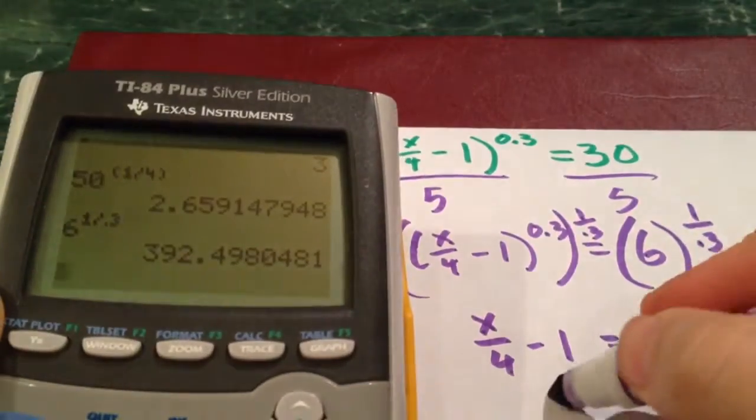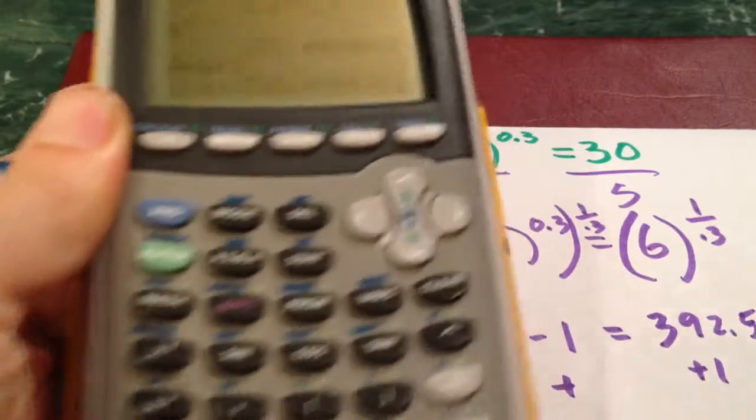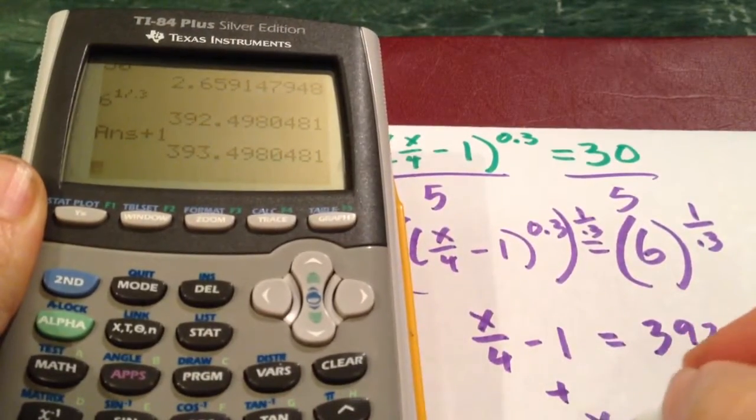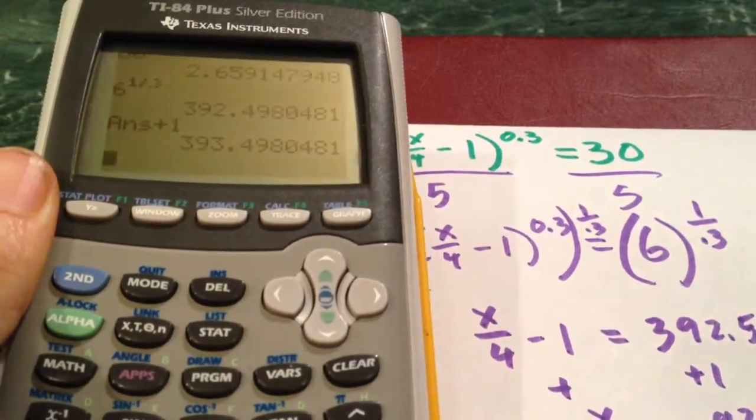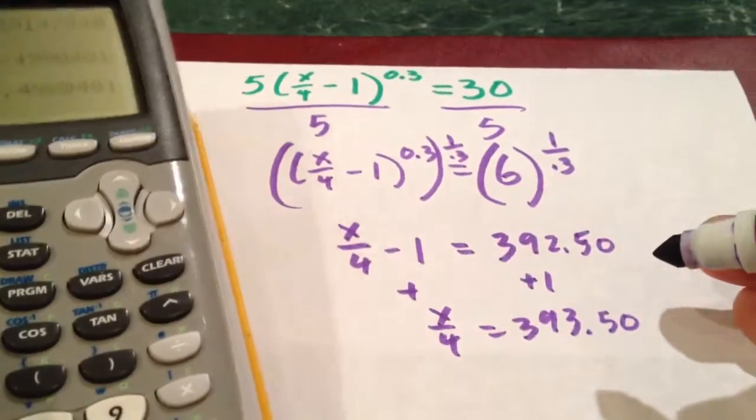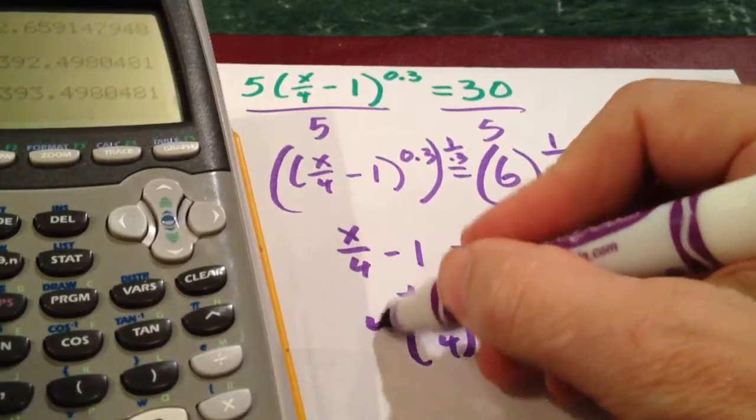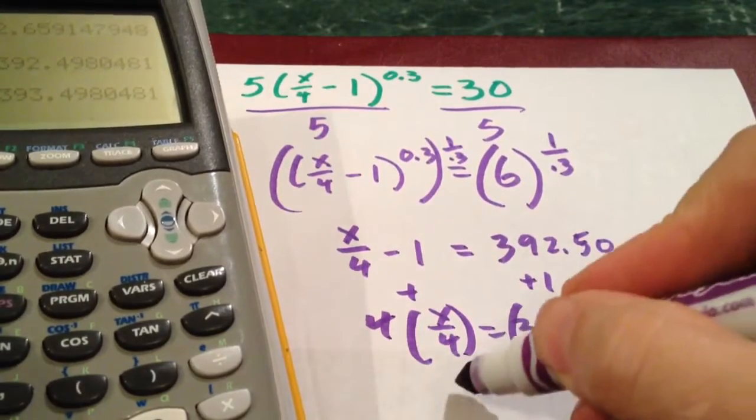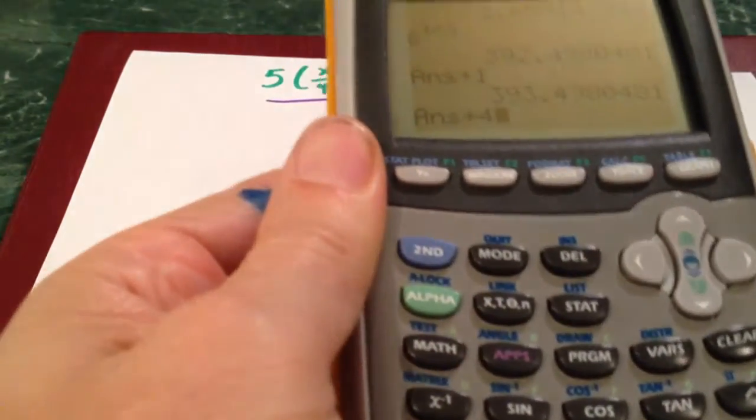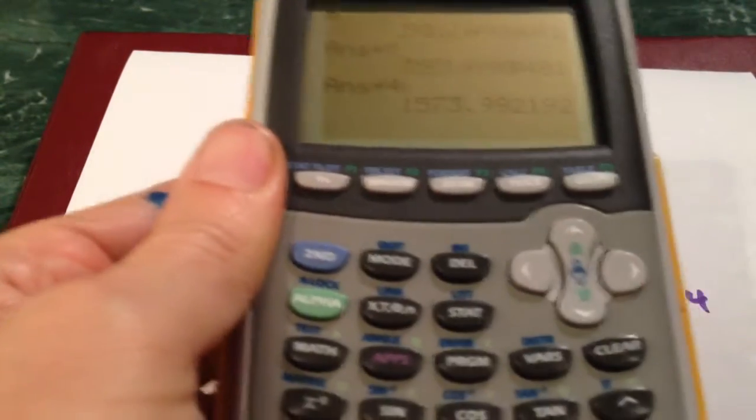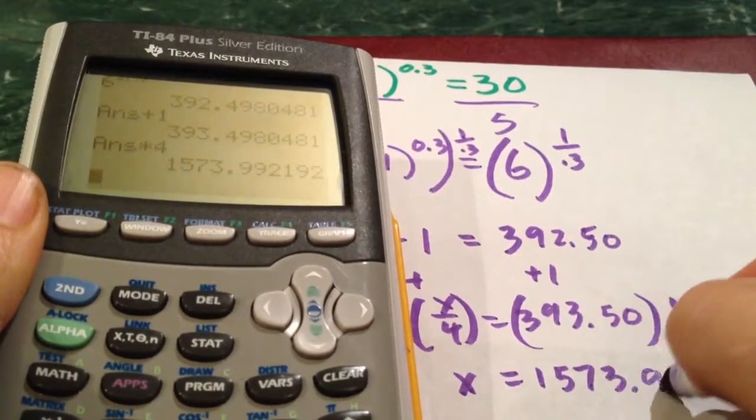I need to add 1 to both sides, so that's going to be plus 1. So that's x over 4 equals 393.50 roughly. Then I've got to be careful, multiply times 4, not divide. It's a very common thing to accidentally do. So I've got x equals, and then times 4, equals 1573.99.